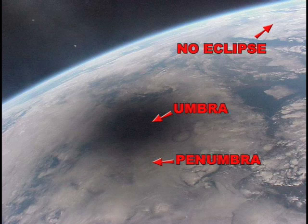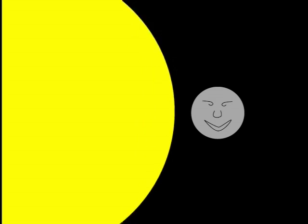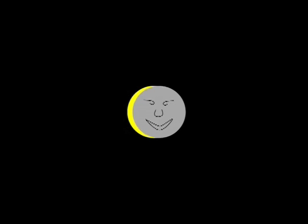A solar eclipse happens somewhere on Earth roughly every year and a half. In an interesting coincidence of nature, the Moon is about 400 times smaller than the Sun, but is 400 times closer, so the Sun and Moon appear to be the same size in the sky, about the size of a pea held at arm's length.